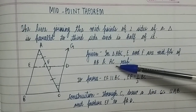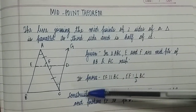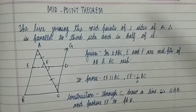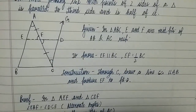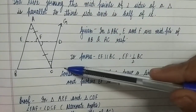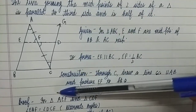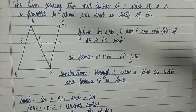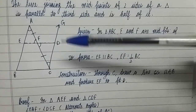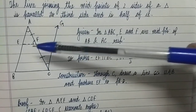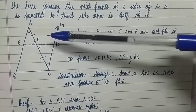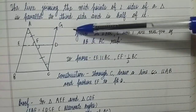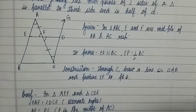We are given triangle ABC, where E and F are the midpoints of AB and AC respectively. For construction, through point C we have drawn a line CG which is parallel to AB. We have also produced EF to a point D.